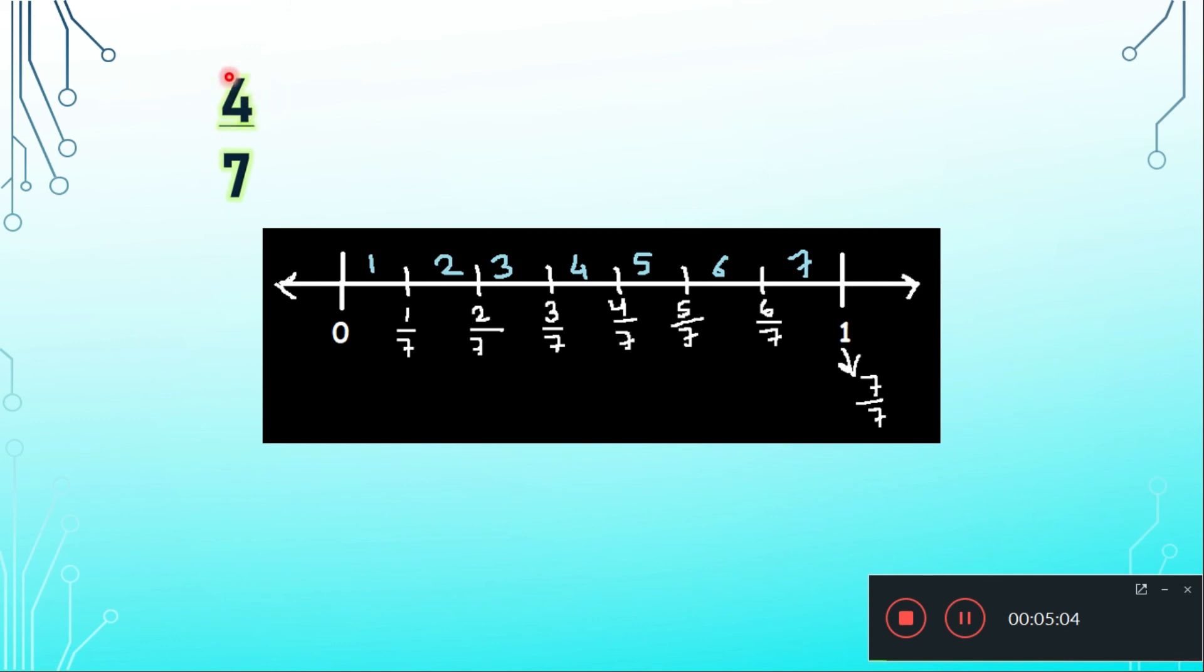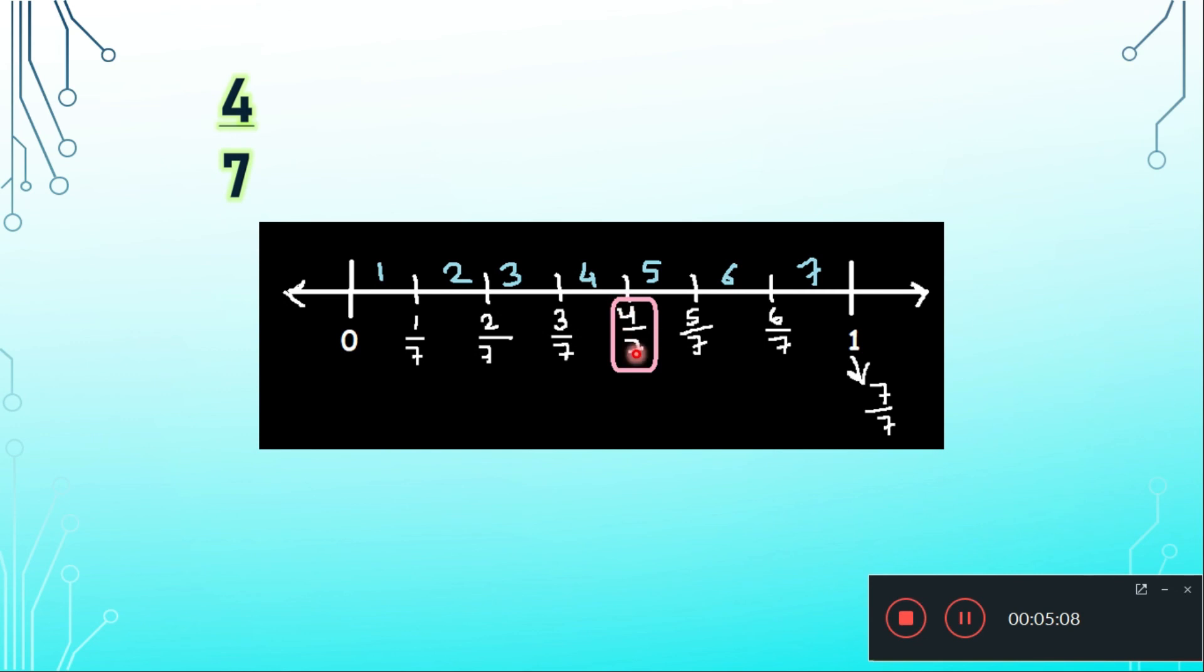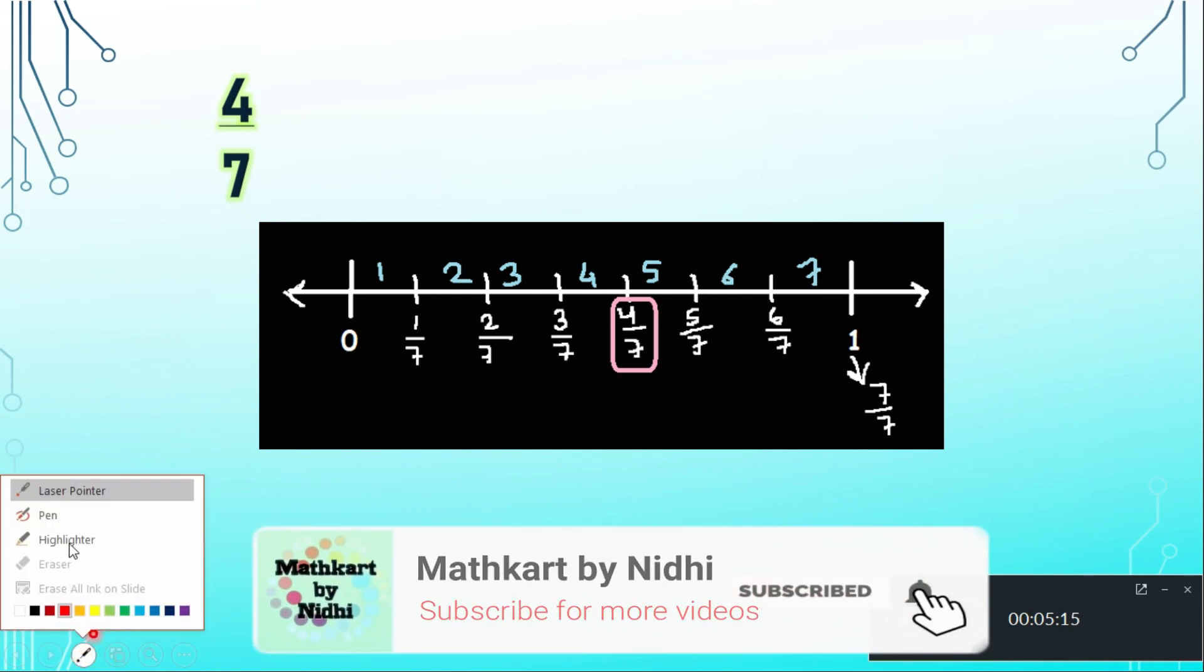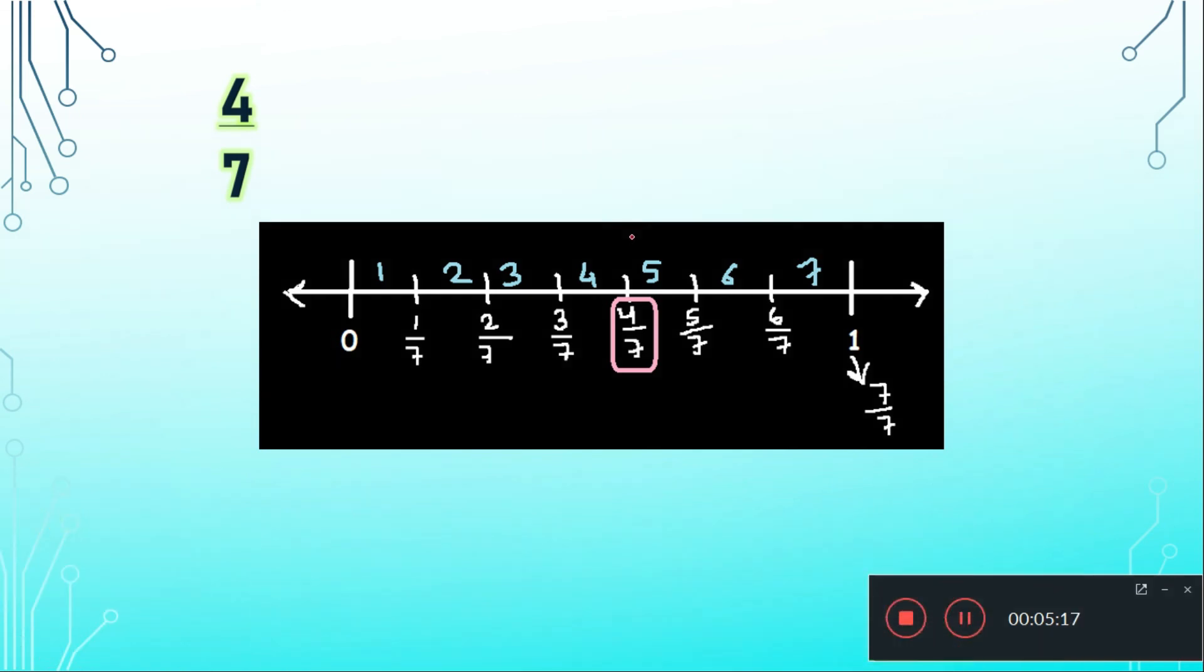So now where is 4 by 7? Yes, you are right, 4 by 7 is here. So this is the representation of fractions on the number line. Here we have 4 by 7 which is the point which is known as 4 by 7.